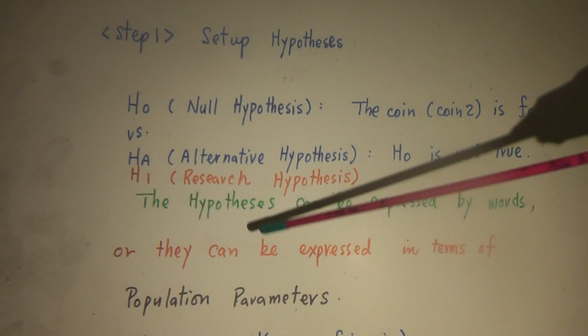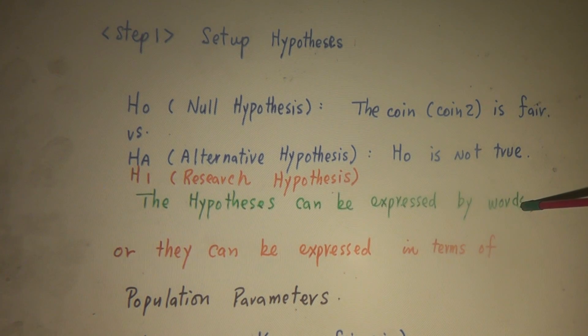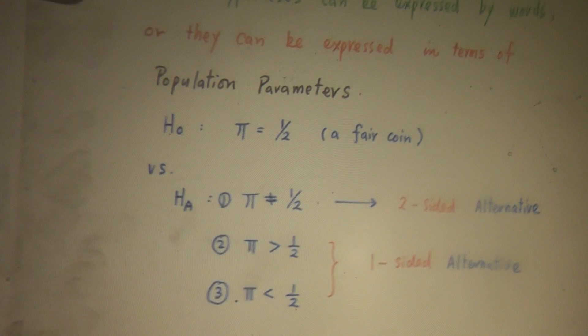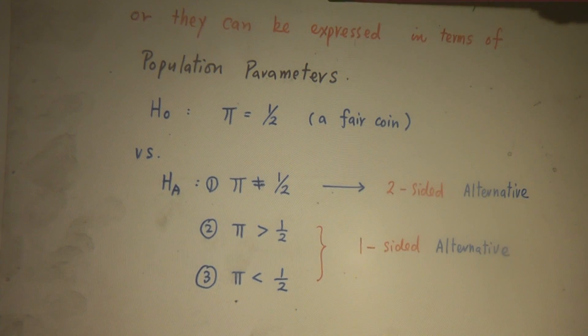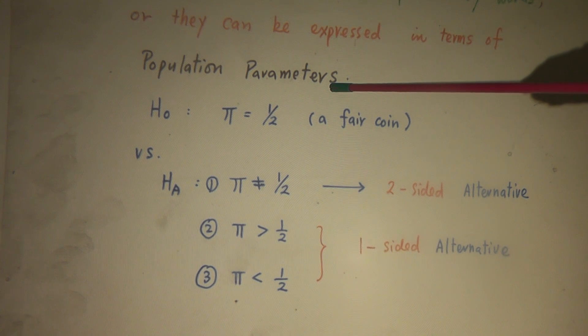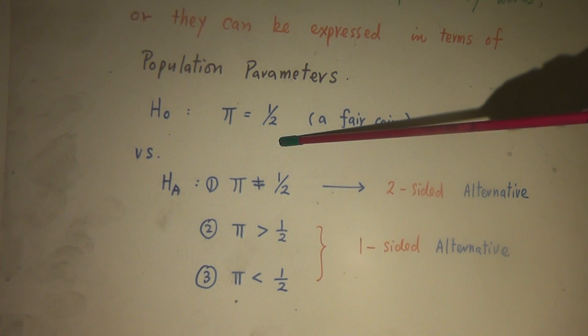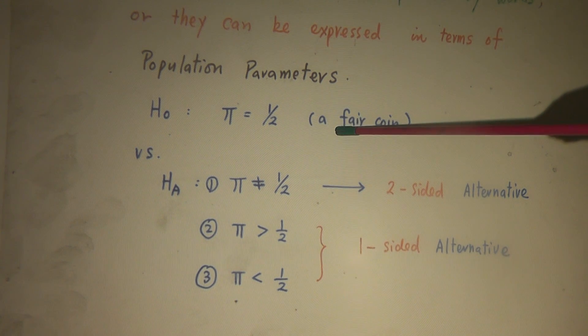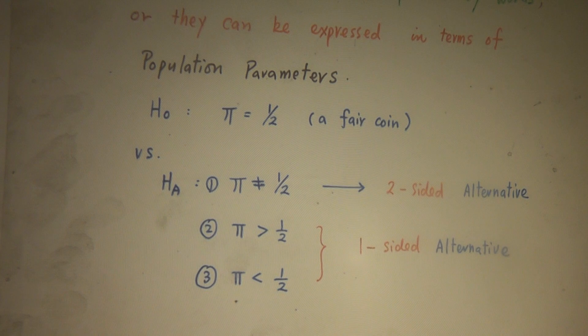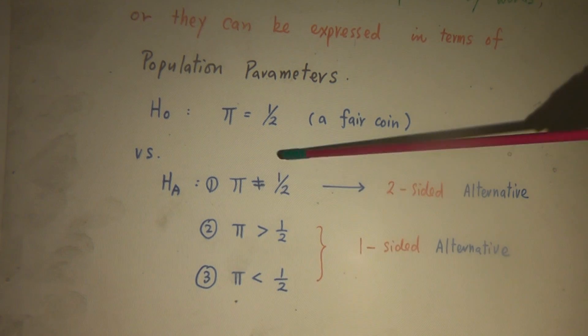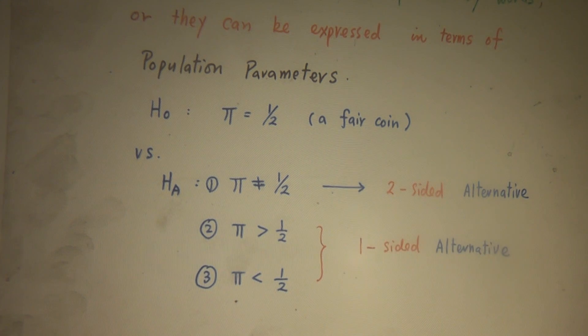Now, the hypotheses can be expressed by words, or sometimes they can also be expressed in terms of population parameters. The hypothesis can be expressed by words, or in terms of population parameters. In our example, H0, π is 50% or one half. This means the coin, the given coin is a fair coin. And against HA, HA says H0 is not true. Having said that, there are three different ways for us to set up alternative hypothesis.